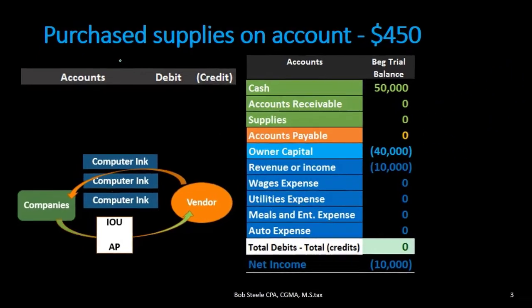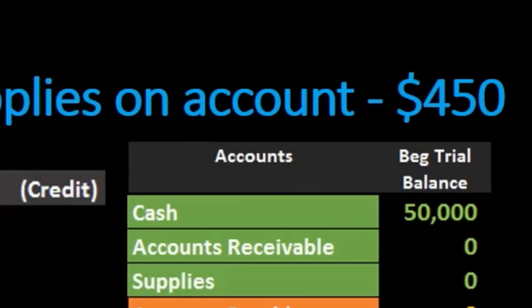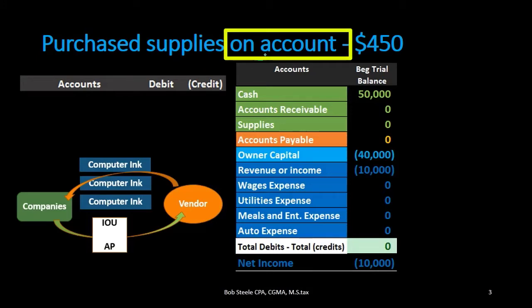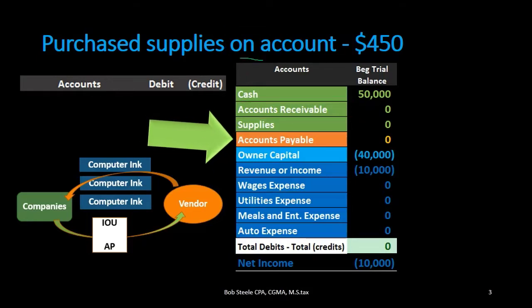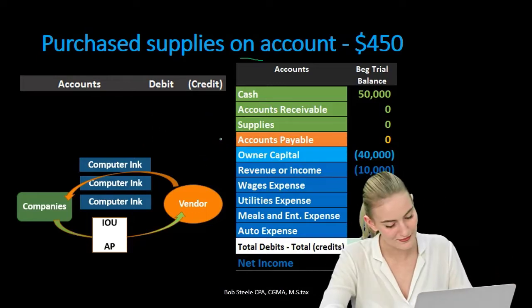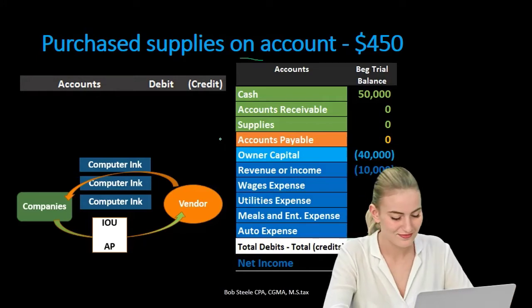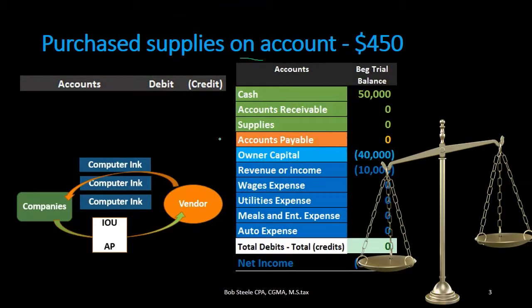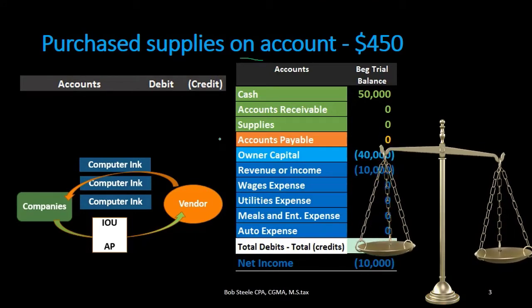We are now going to record the first transaction: purchased supplies on account for $450. First question — is cash affected? No, because the purchase happened on account. We know that 'on account' typically means either accounts receivable or accounts payable. In the context of purchasing, we mean accounts payable. However, it may be easier to start with what we received first, because we can more easily determine whether to increase or decrease it.